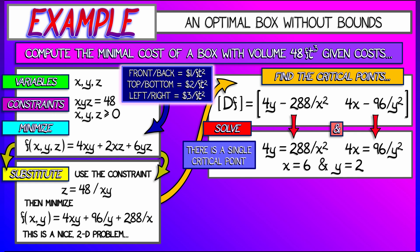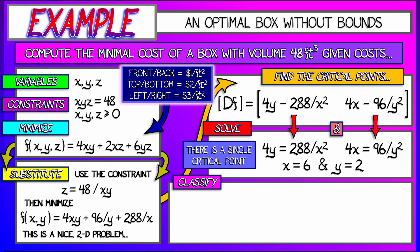Maybe take a moment and check that, and then let's classify that critical point by computing the second derivative. The entries of that 2 by 2 matrix are 576 divided by X cubed, 4, 4, and 192 divided by Y cubed. When we substitute in X equals 6 and Y equals 2, then the second derivative at that critical point is 8 thirds, 4, 4, and 24.